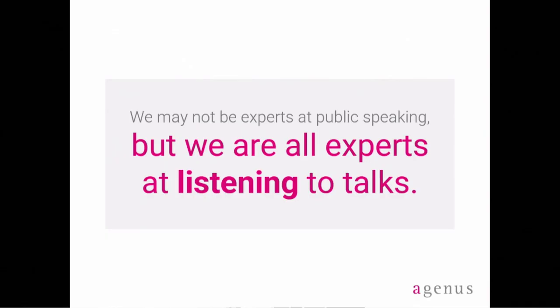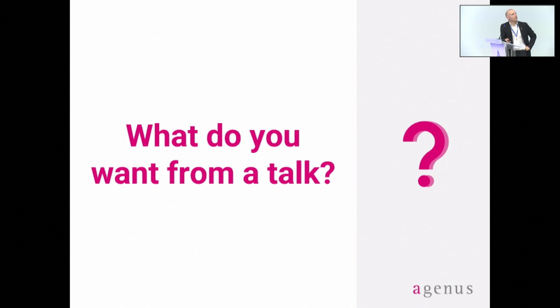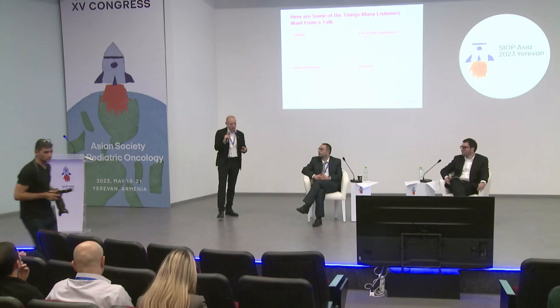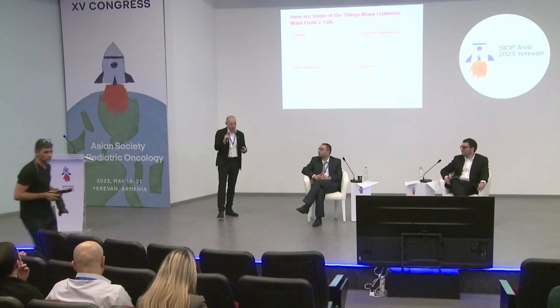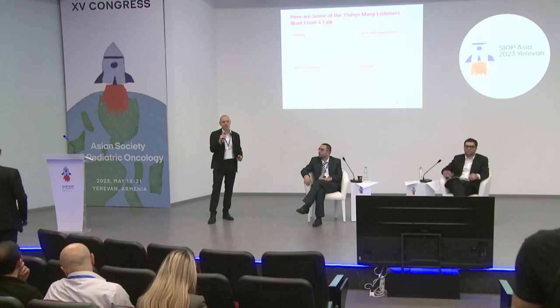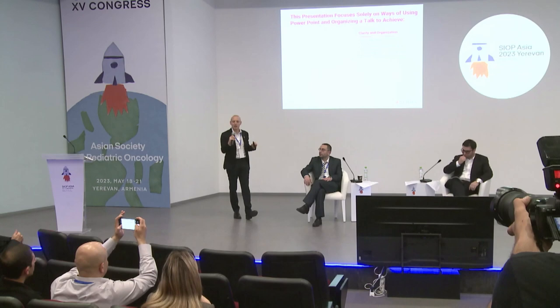We may not be experts at public speaking, but we're all experts at listening to talks. So what do you want from a talk? Here are some things people might want: decent content, interesting questions, clarity in organization, a nice style and delivery, and some expertise so it's credible. What I'm going to talk about now is one of those four quadrants only — clarity in organization, making a talk understandable, avoiding jargon, and being clear and simple.